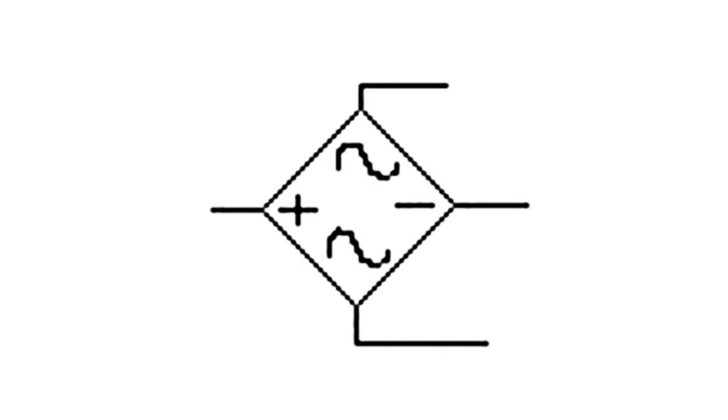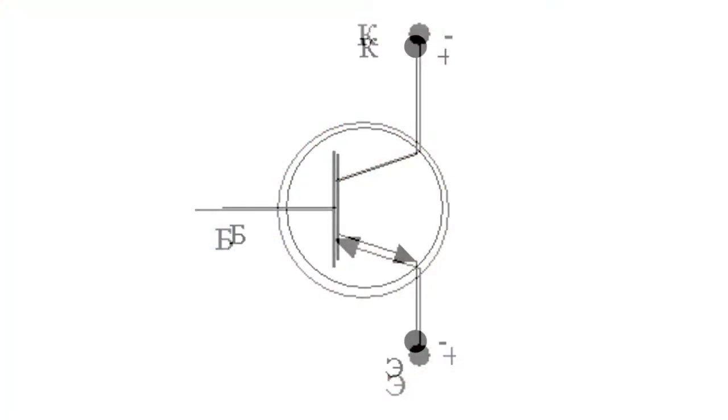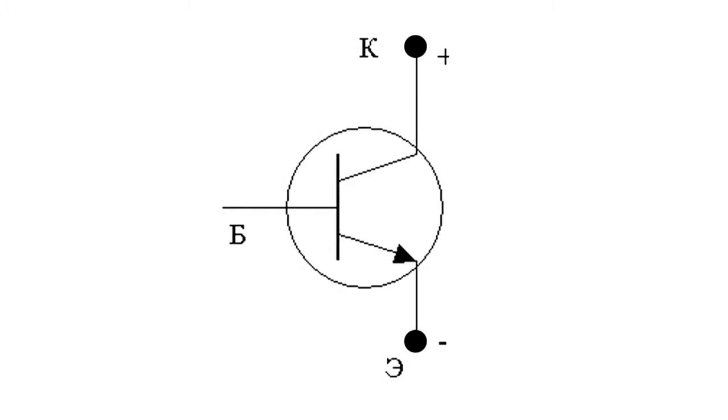Transistors are designated with Latin letters VT and a serial number of the element. If the emitter arrow is directed to the center, this is a PNP conductivity transistor. If it is directed from the center, this is an NPN conductivity transistor.